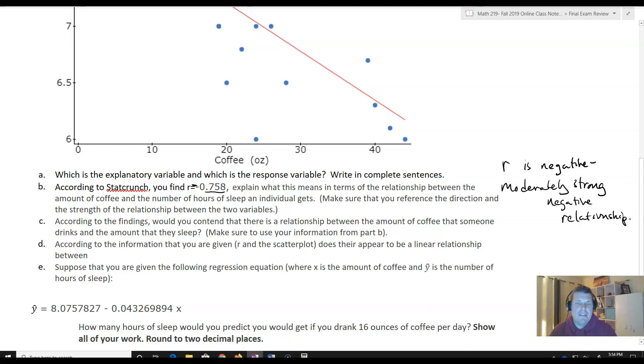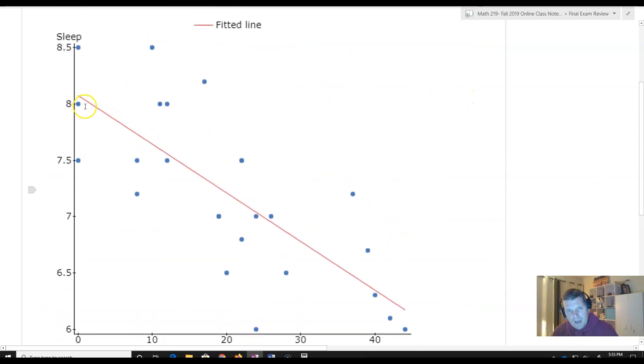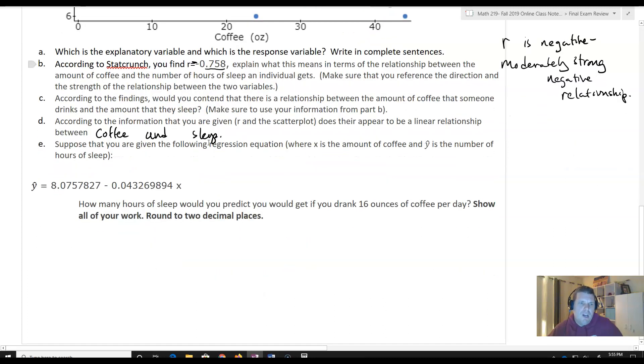Now, according to the information that you are given, R and the scatterplot, does there appear to be a linear relationship between coffee and sleep? Well, yeah, it does appear to be linear. It's basically the same question, just asking it a slightly different way. Certainly, we can see that linear relationship. It doesn't seem to be curving in any way. And in addition, we said that it's a moderately strong negative relationship. And so consequently, yes, there does appear to be a linear relationship.